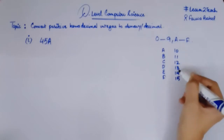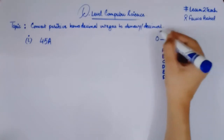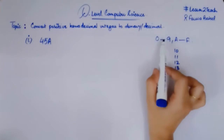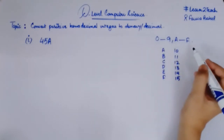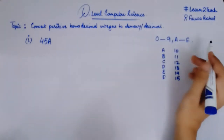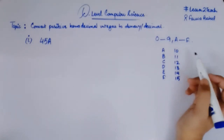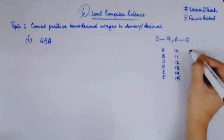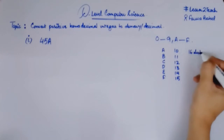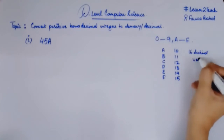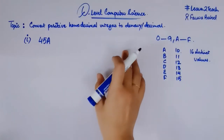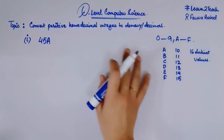So there are 6 plus 10 — that is 16 distinct values used in hexadecimal numbers in order to represent any integer. So let's suppose I have a number that is 4, 5, A. It's a hexadecimal number and I need to convert this number into a denary or a decimal number. What are the steps we need to do? Let me tell you that.